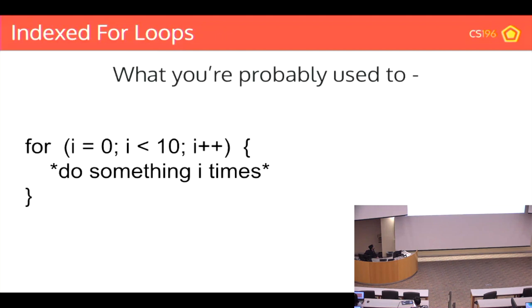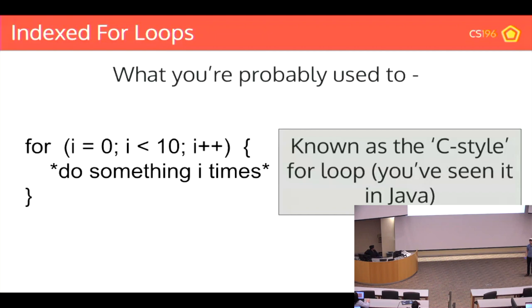Let's start off with index for loops. This is what you're likely used to — a C-style for loop. You start at 0, loop until it's less than 10, incrementing by 1 every single time. This is a C-style for loop you've seen in Java, and many languages use this style. Rust does not.